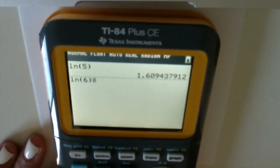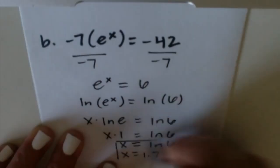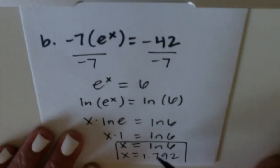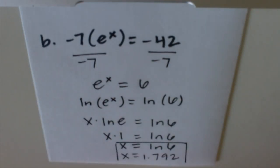So ln(6) = 1.792. You can list your answer as either natural log of 6 or the decimal form would be 1.792.